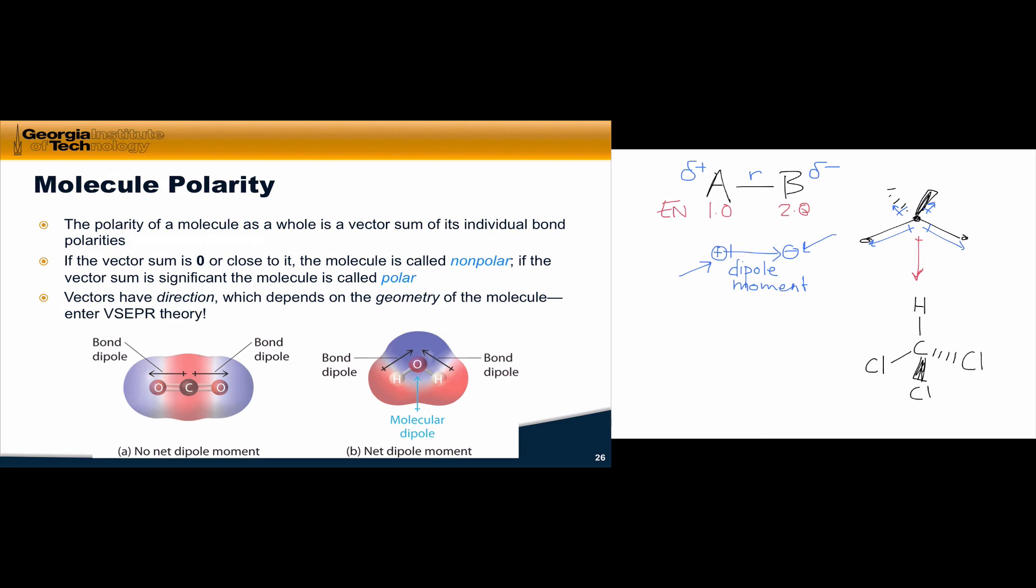The CH bond dipole is polarized somewhat towards carbon, which is a little more electronegative than hydrogen. And of course, the CCl dipoles are all strongly polarized toward the more electronegative chlorine atoms.